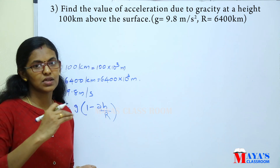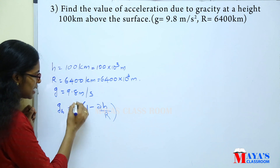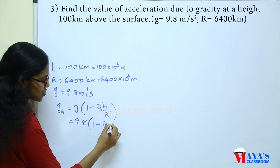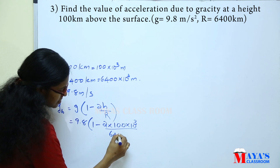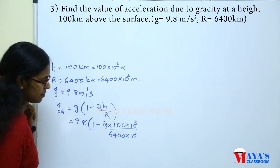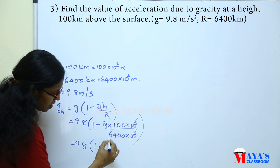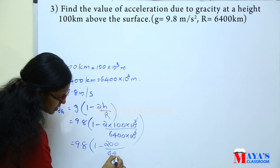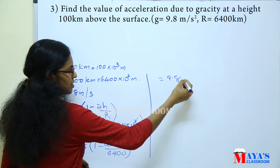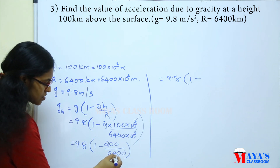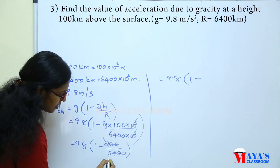This is about the variation of G with depth and altitude. Substituting the values: G is 9.8, h is 100 km = 100 × 10³, and R is 6400 × 10³. So g' equals 9.8 into (1 minus 200 divided by 6400). Simplifying: 200/6400 = 2/64 = 1/32.